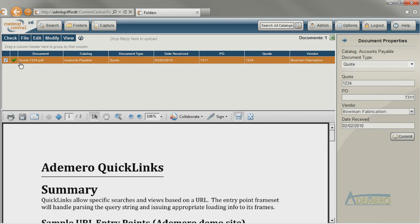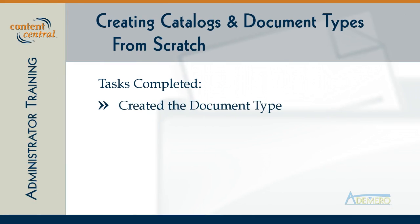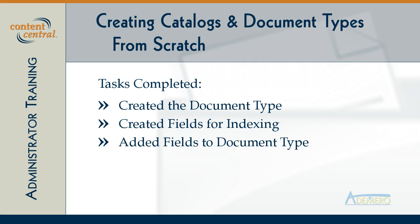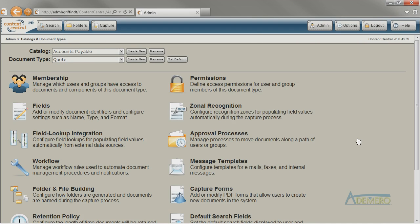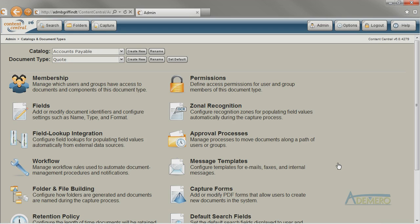Those are the basic steps for creating and configuring a new document type from scratch. We created the document type, created any global fields we needed, added those fields to the document type, configured those fields for viewing in search and in the results grids, and configured folder and file building. You can continue configuring more advanced features on the new document type, like approval processes or workflow. Remember to give users permissions to your new document type so they can use it.